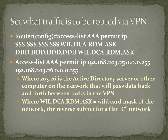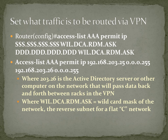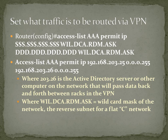Then set what traffic is going to be routed via the VPN. The instruction is: access-list AAA permit IP, then 192.168.203.25 — the external IP address of your peer — with a reverse subnet mask, to 192.168.203.26 — yours — with a reverse subnet mask.